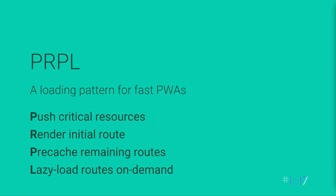Last, we have the purple pattern. This is a pattern the Polymer team developed to describe how to serve and render lightning-fast progressive web apps. PURPLE stands for: push your critical resources, render your initial route, then in the background pre-cache the remaining routes, and finally, as the user navigates your app, lazily load the routes they go to on-demand, either from the cache or from the network.